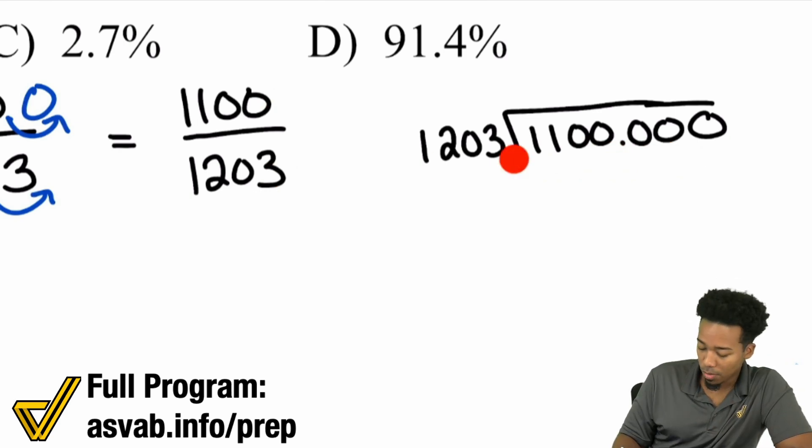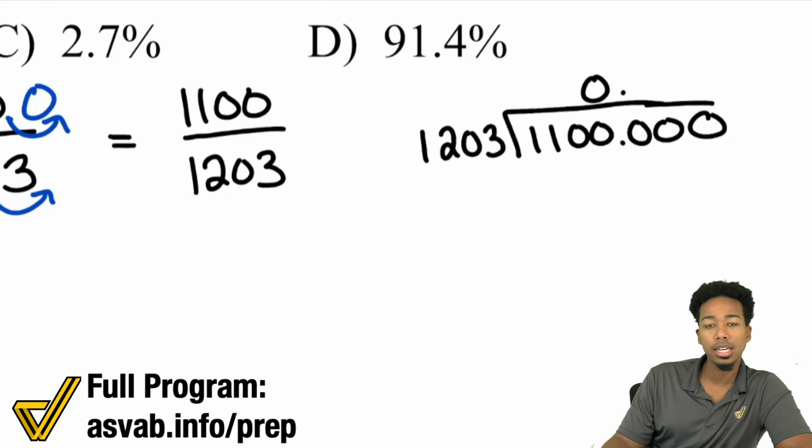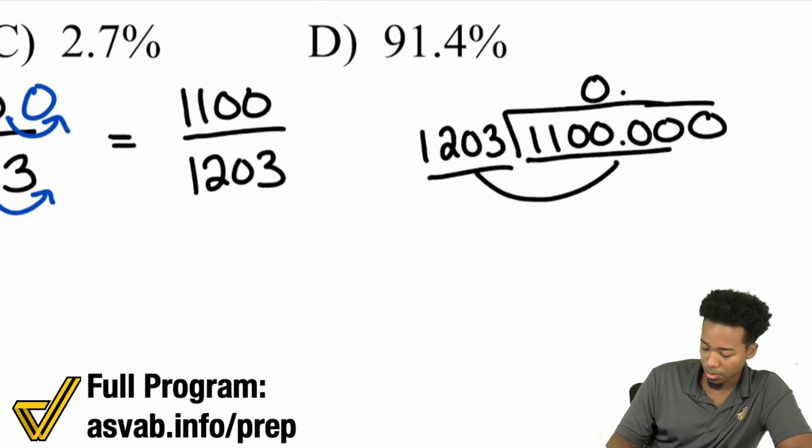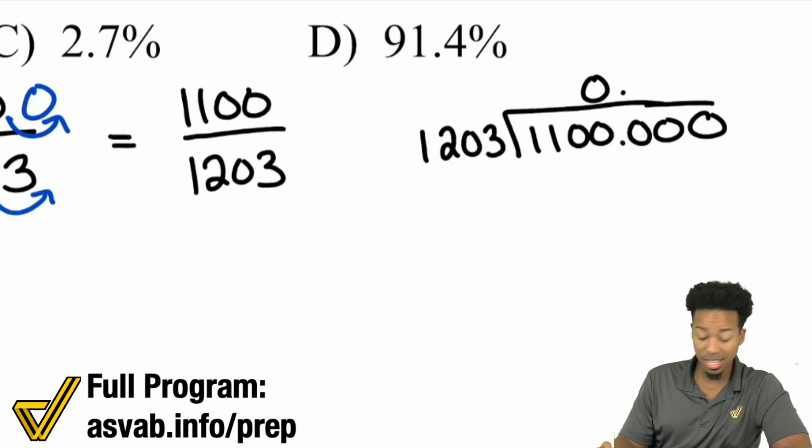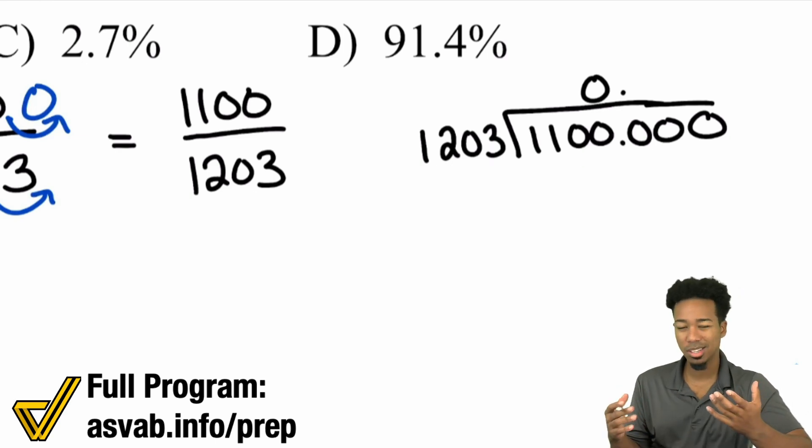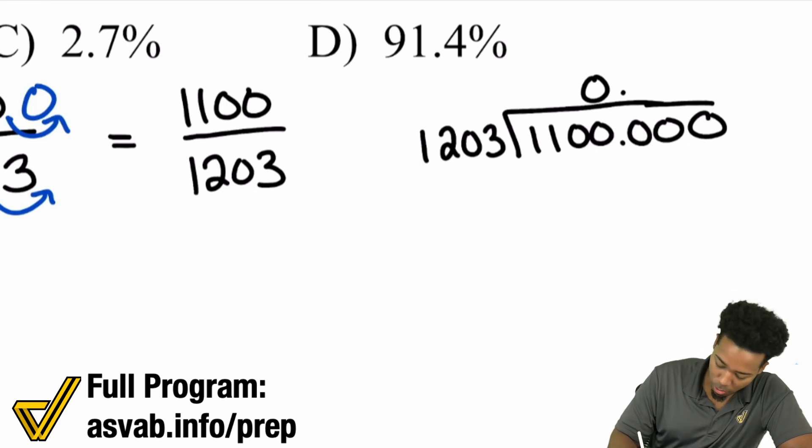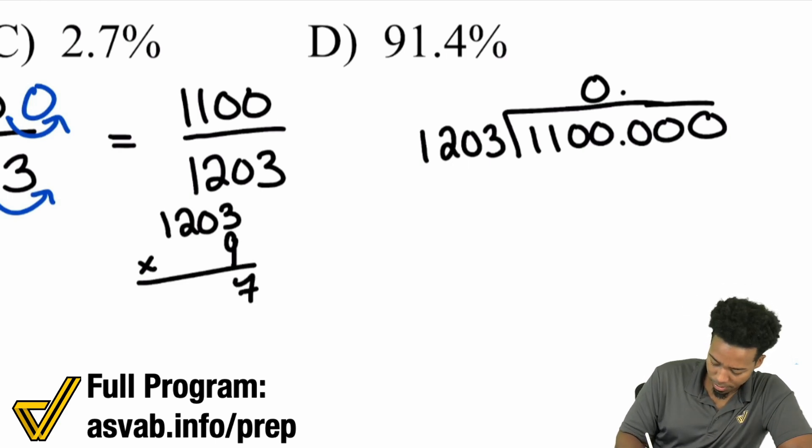We're going to need those decimals because 1100 is less than 1203, so your result is going to be less than one - it's going to be a decimal. Then you're going to turn it back into a percent. 1203 doesn't go into 1, 11, 110, or 1100. It could go into 11,000 though. So I'm going to put a zero right over here, put that decimal place where it belongs. What number could go into 11,000? I'm going to take a guess - maybe potentially nine because 10 would be too much. 10 would be 12,030. You've got to be able to experiment.